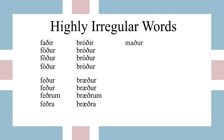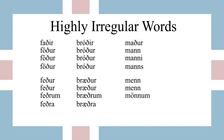The last highly irregular word is 'maður', meaning 'man'. We have accusative 'mann', dative 'manni', and genitive 'manns'. In the plural we have 'menn', 'menn', 'mönnum', and 'manna'. One other thing to watch out for with this word: when you add the definite article onto the nominative plural form, it becomes 'mennirnir' rather than just 'mennir' — it gets the extra -ir- in the middle.